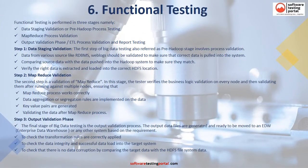One of the most critical functional testing approaches is performed in three stages. The first stage is also referred to as the pre-Hadoop stage, where data validation, source data comparison, and verification of extracted data is done. The second stage is a validation of MapReduce, where the tester verifies business logic validation on multiple nodes. In the final stage of big data testing, transformation rules, data integrity, and data corruption checks are applied on the output data files.